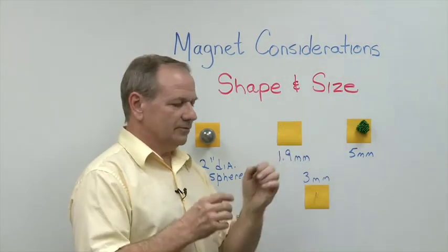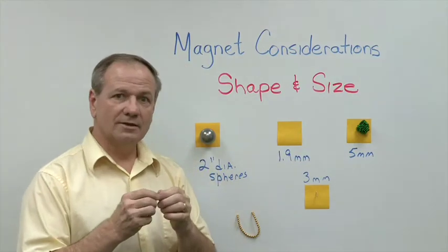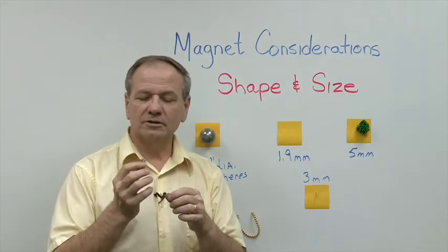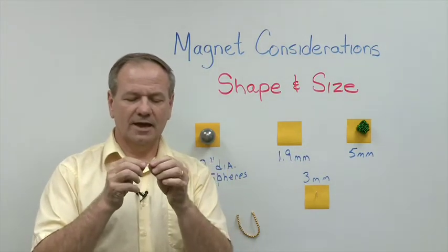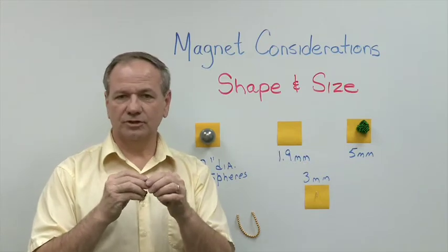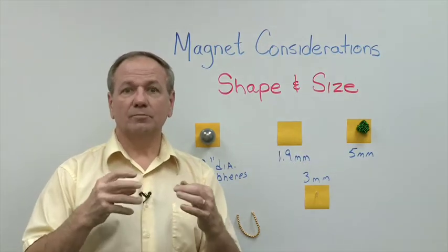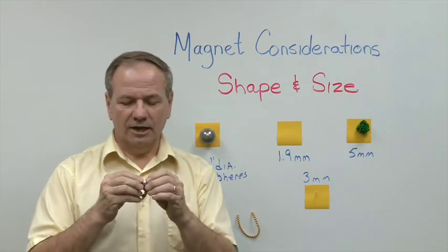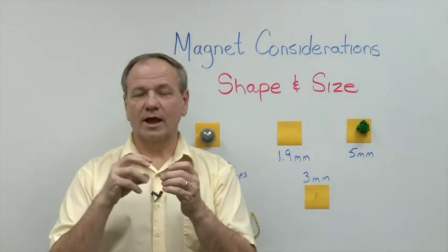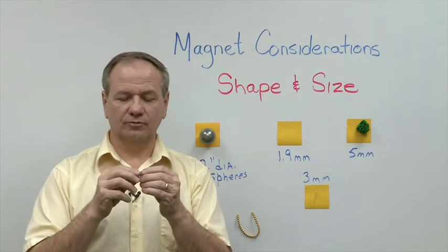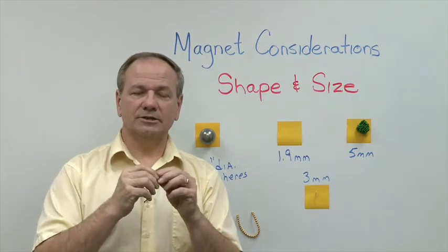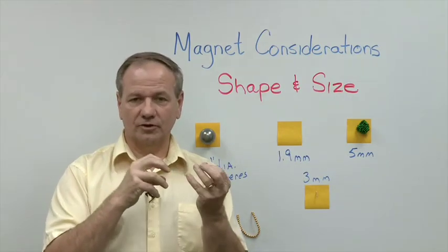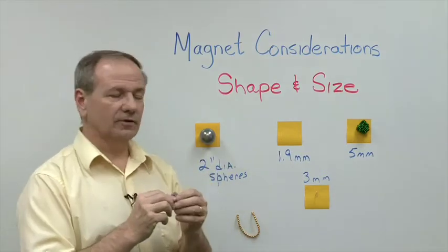We also have some that are even as small as 1.9mm. That is an extremely small, thin magnet. Some of the people that use these need very small filtration systems. Let's just say you had something that was a half inch in diameter and you wanted something that would help trap ferrous particles as they traveled through it. Using some of these magnets in line can help track all the particles out of the flow.